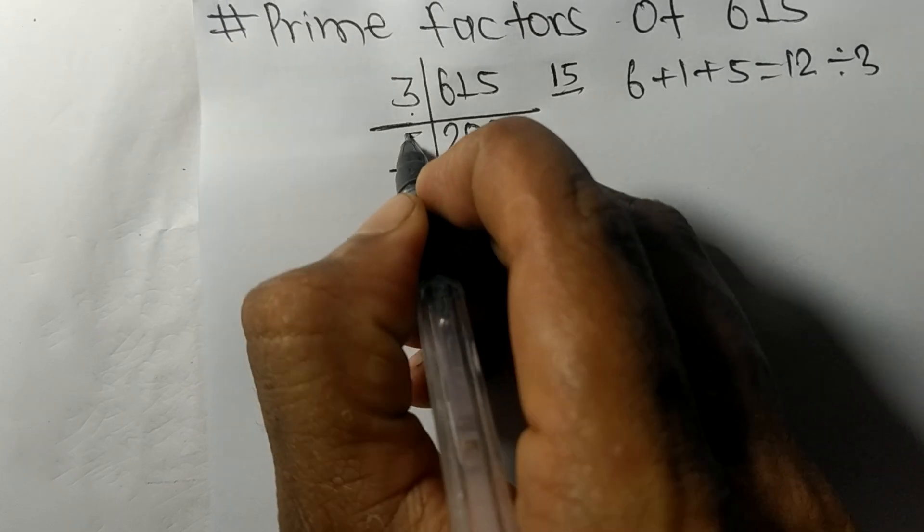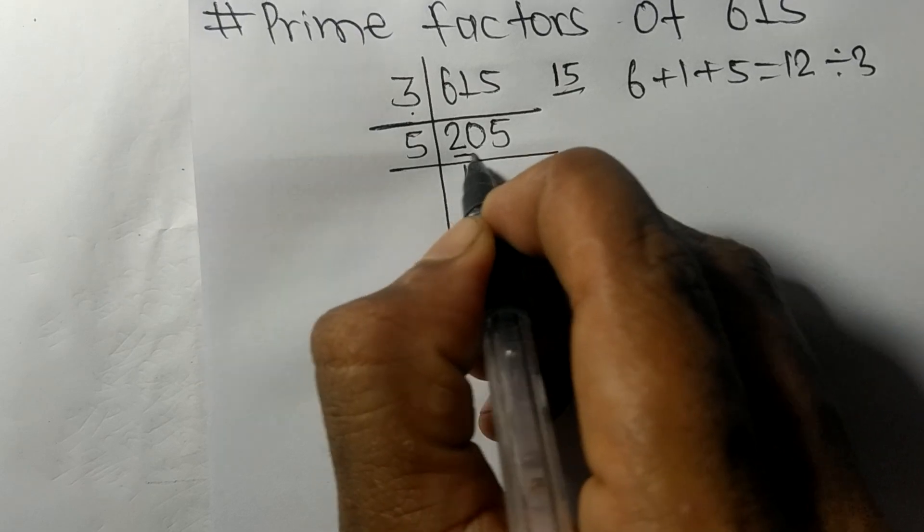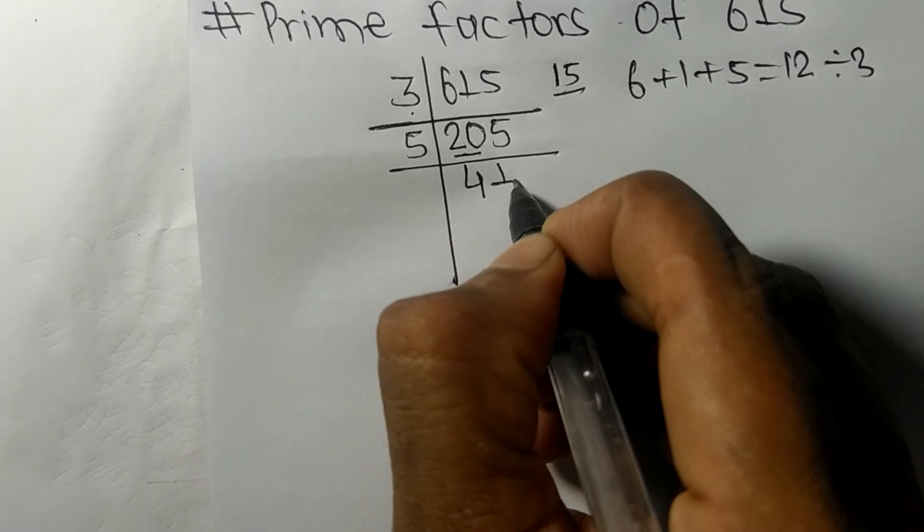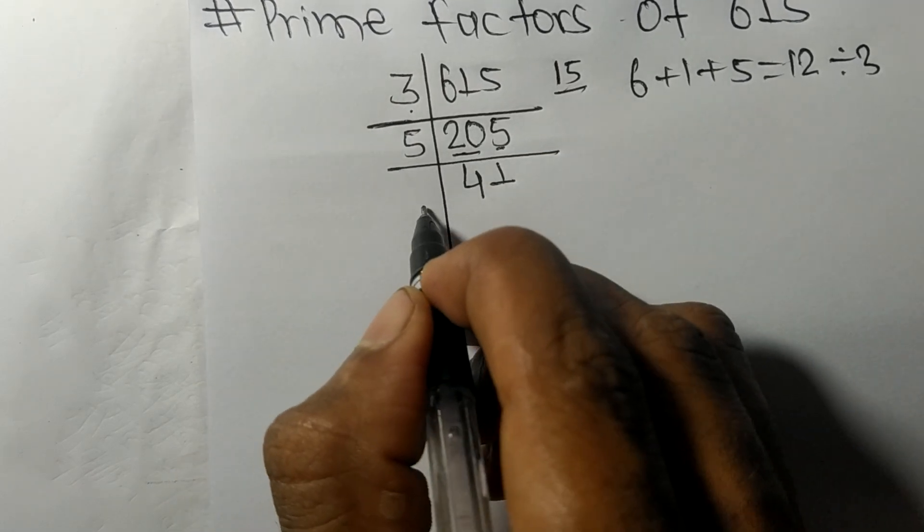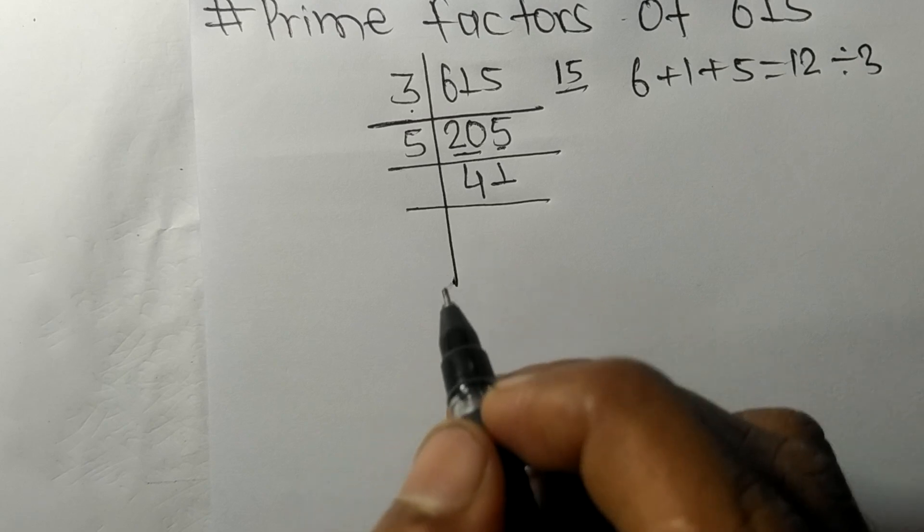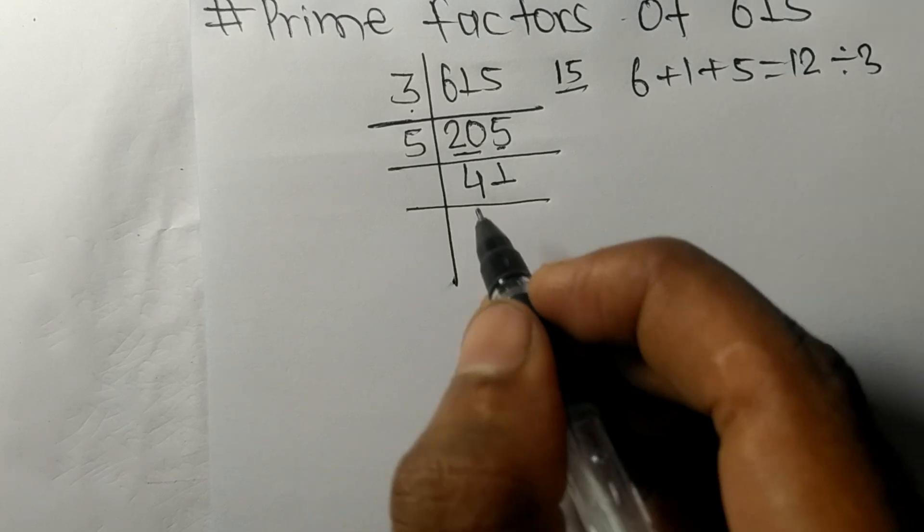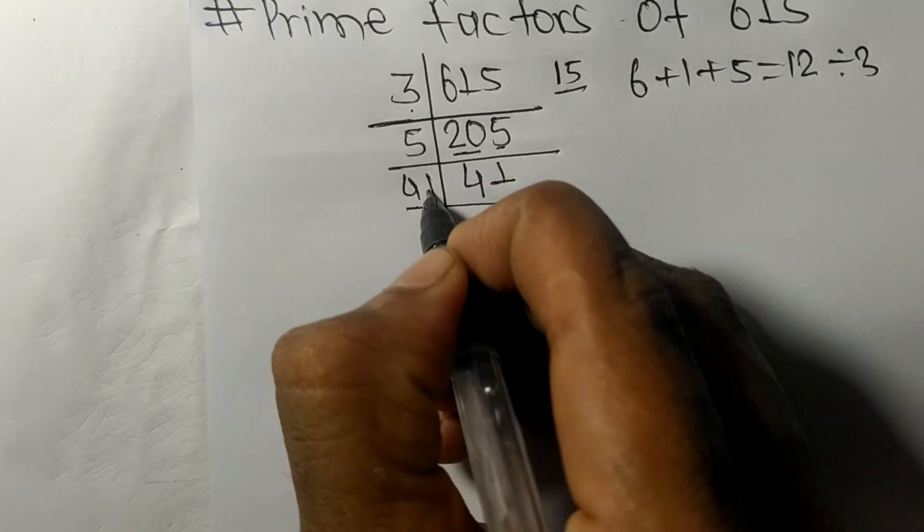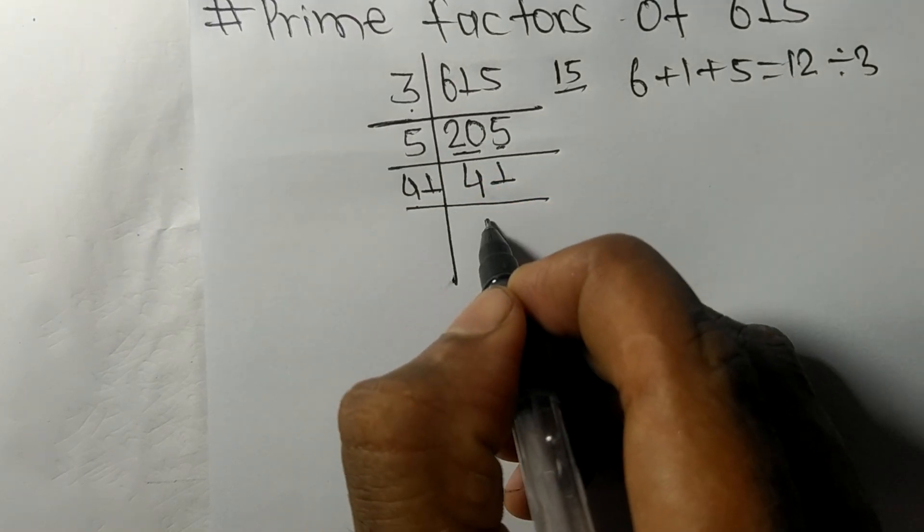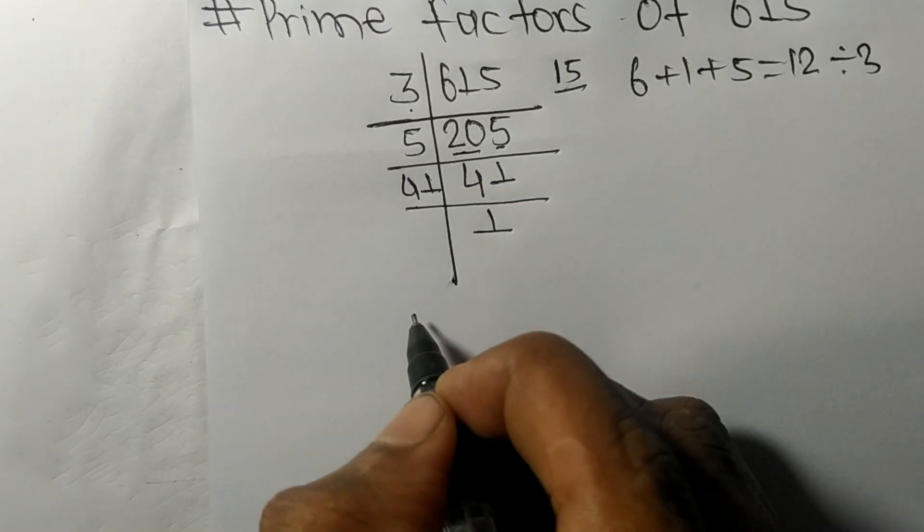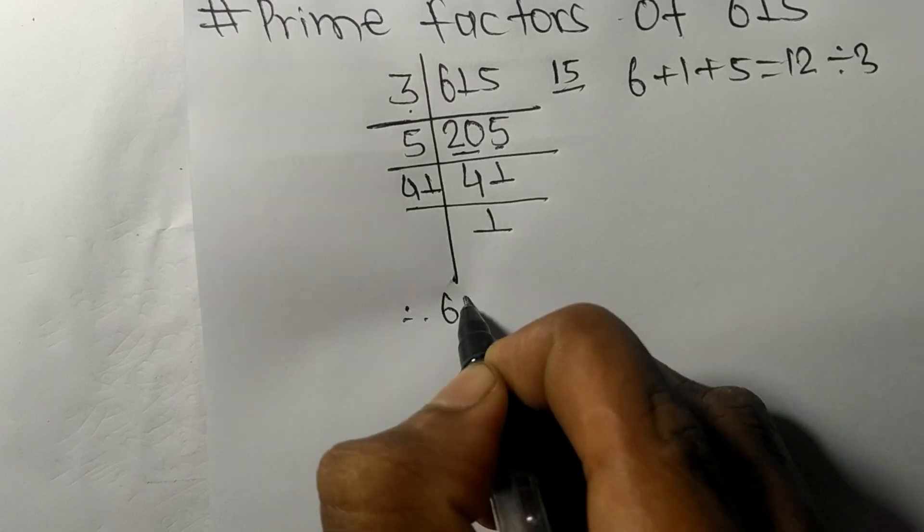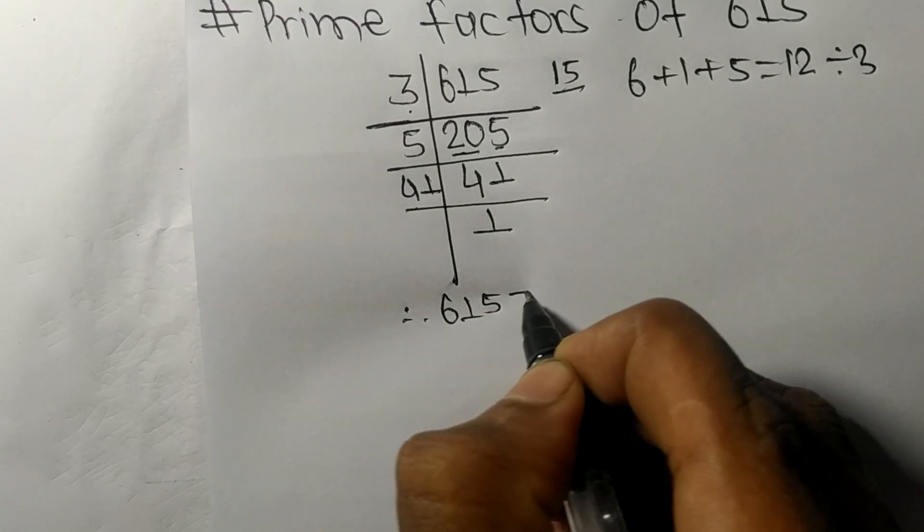5 times 4 is 20, 5 times 1 is 5. Now we got 41, which is a prime number, so it is divisible by 41 itself and we get 1. Therefore, 615 is equal to...